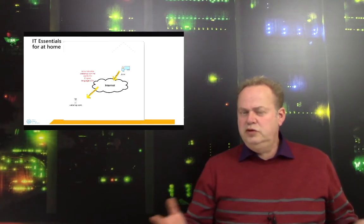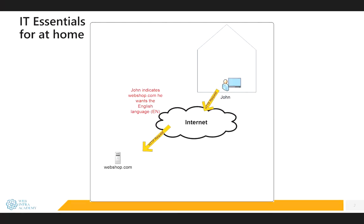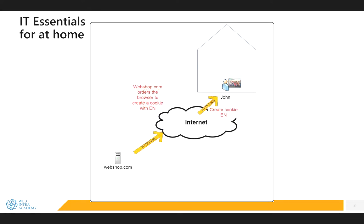Let's start with the first one, a user preference cookie. In this example, John visits the website webshot.com for the first time, and webshot.com asks him which language do you prefer. John enters on the webpage that he wants English. So an HTTP request is sent to webshot.com saying that John prefers English. At that moment, webshot.com will create a reply, and with this reply it commands the browser of John to create a cookie, and the content of this cookie is English — it's EN.